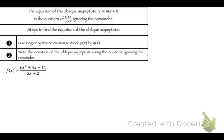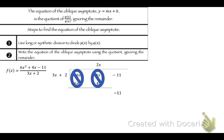Let's do this one. The degree on top is again one more than the degree on bottom, so we have to use long division. Divide first with first: 6x-squared divided by 3x is 2x. Multiply — you get 6x-squared and 4x. Subtract; those both cancel. I'm left with negative 11. 3x doesn't go into negative 11, so that's my remainder. I ignore the remainder, and my asymptote is y equals 2x.